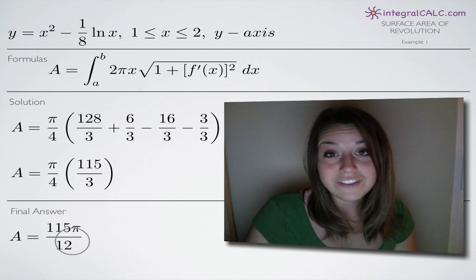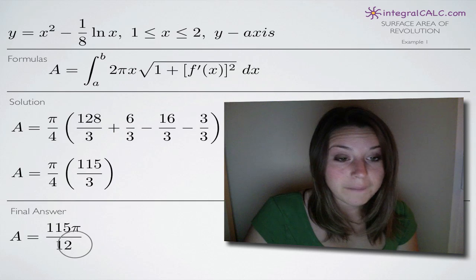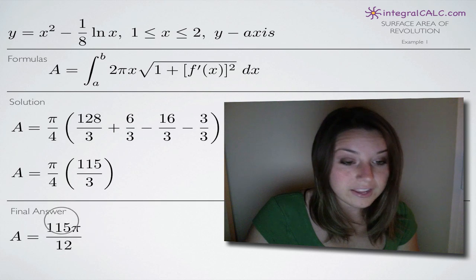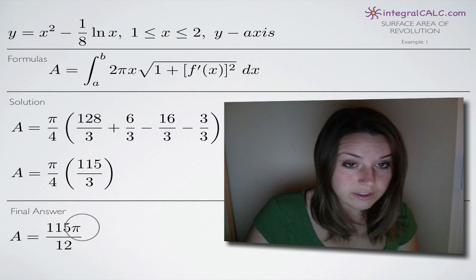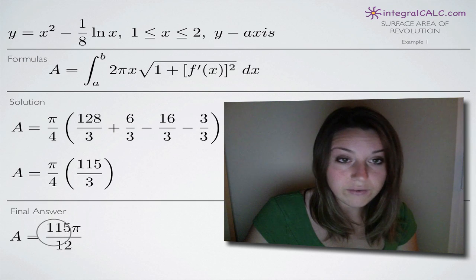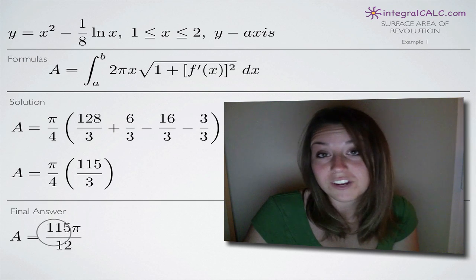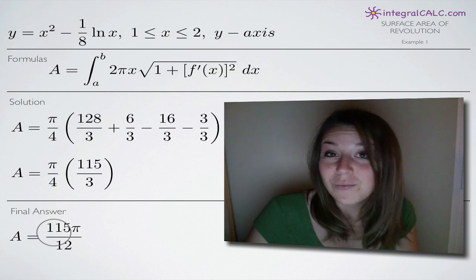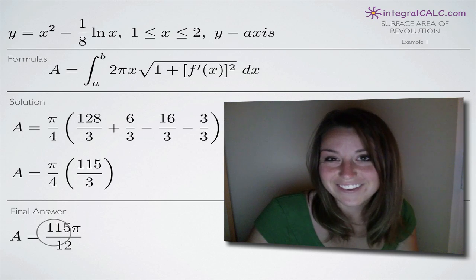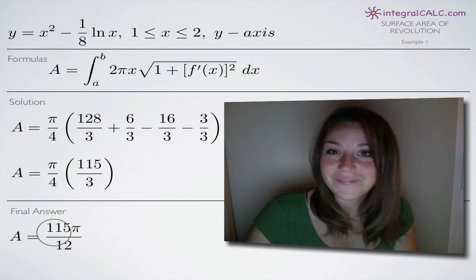That's our final answer — 115 pi over 12. That is the form you get for your final answer for surface area of revolution. I hope that helps, and I'll see you in the next video.